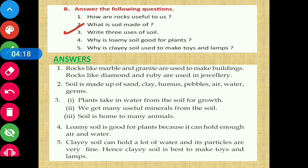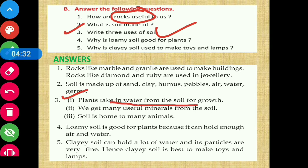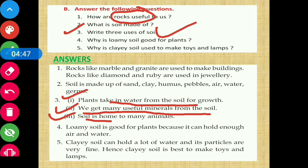Question number three: write three uses of soil. First, plants take water from the soil for growth. Second, we get many useful minerals from the soil. Third, soil is home to many animals. These are the three uses of soil.